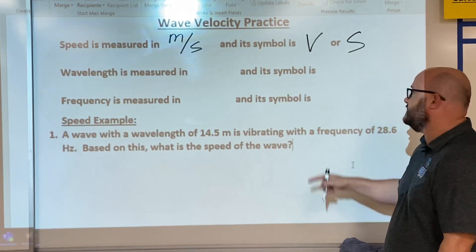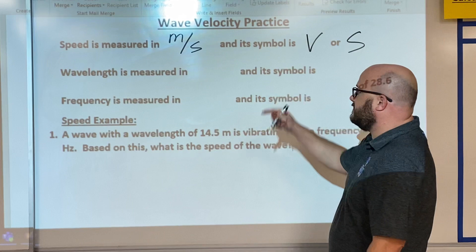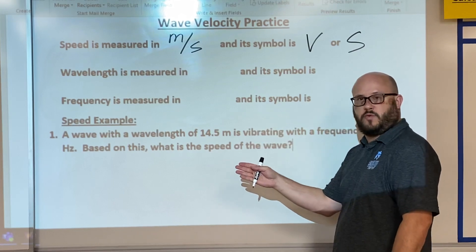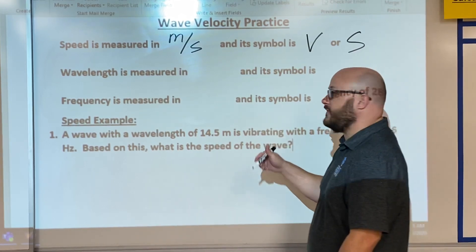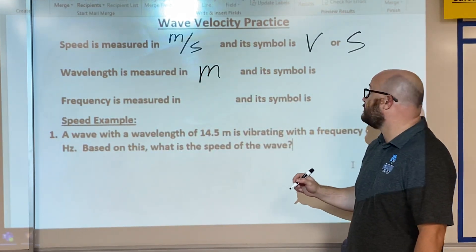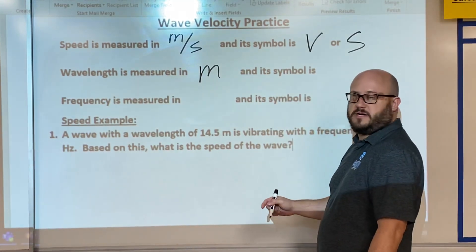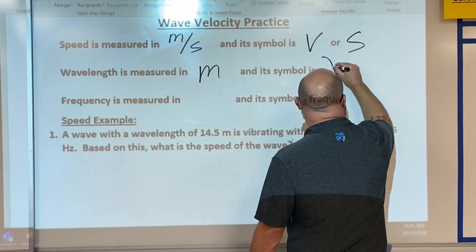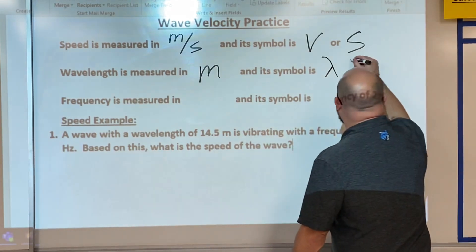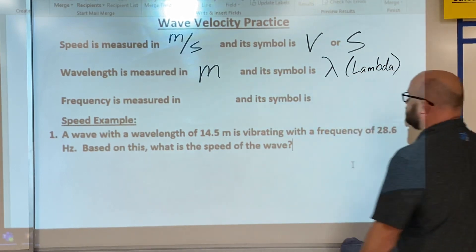So that's speed. Wavelength is the distance between a crest of one wave to the crest of the next. We measure that in meters or just lowercase m for an abbreviation. The wavelength symbol is another one of those Greek symbols that we talked about, looks like this, almost like an upside down Y, and we call that lambda.